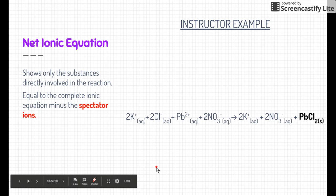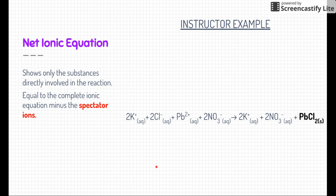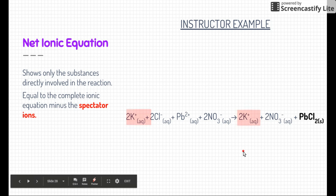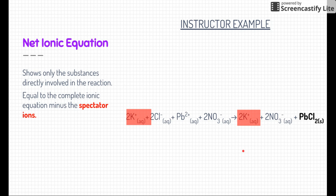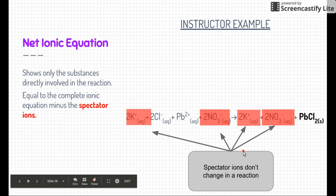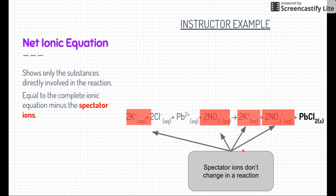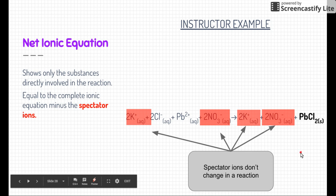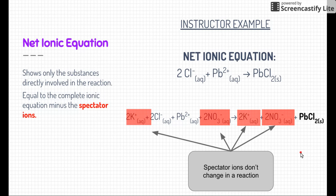Now we take the complete ionic equation and turn it into a net ionic equation. The net ionic equation only shows the substances that are directly involved in the reaction. Look at both sides — do you see anything that's the same? There's 2K⁺ on the reactant side and 2K⁺ on the product side: nothing changed about potassium. The same is true for nitrate. These are called spectator ions. Like spectators in a sport who don't participate in the game, spectator ions don't actually participate in the reaction — nothing changed about them, so they are not part of the chemical change.